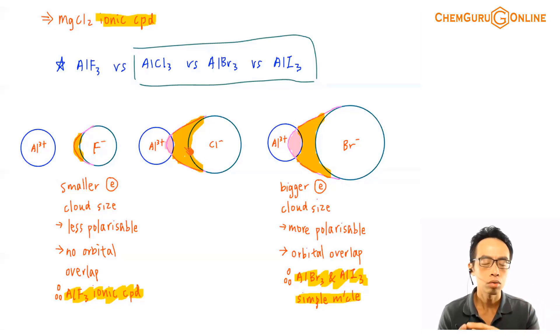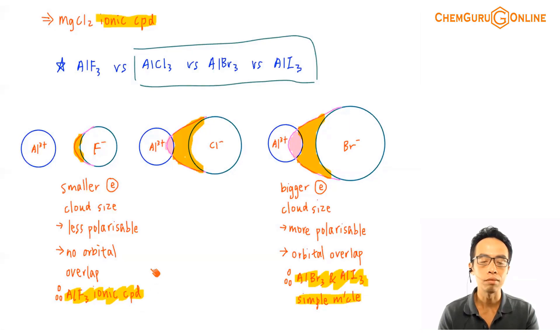So what we will have to do is, we have to memorize that AlF3 is an ionic compound. We don't really need to do a lot of memorizing. Involving AlCl3, we use it as a basis, so this one we need to know. AlF3, we also need to know, because they are at the extremes. The rest of it actually we can deduce.